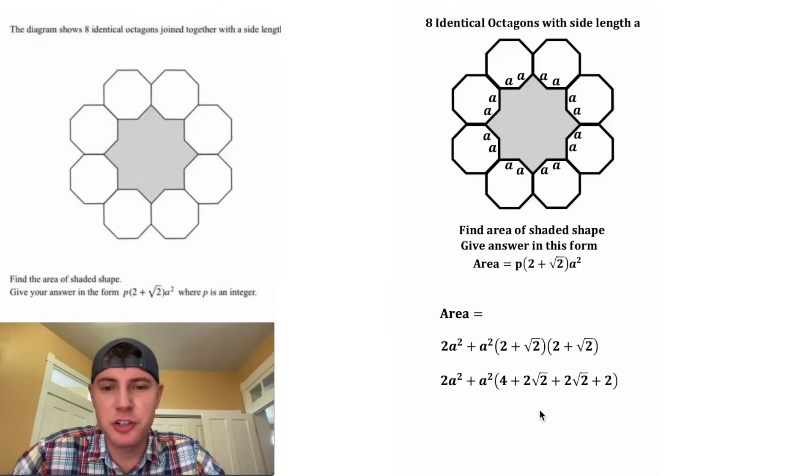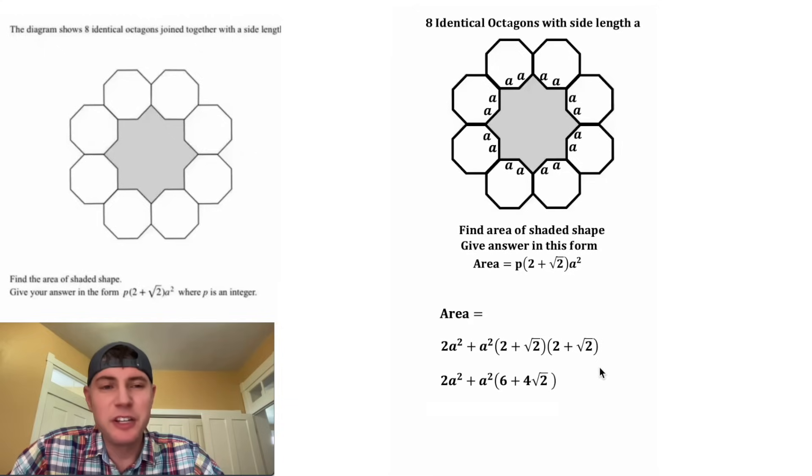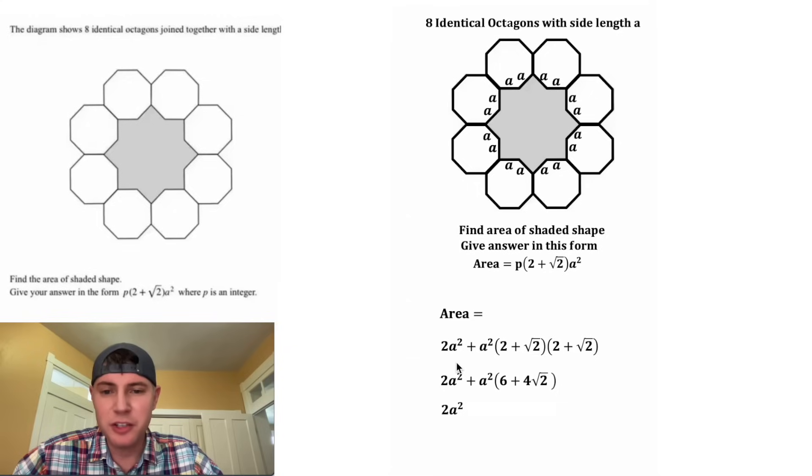And then we can combine like terms. 2 root 2 plus 2 root 2 is equal to 4 root 2, and 4 plus 2 is equal to 6. Next, we can distribute this A squared to both of these terms. So we end up with 2A squared plus 6 times A squared, plus 4 root 2 times A squared. And then 2A squared plus 6A squared is going to be 8A squared.